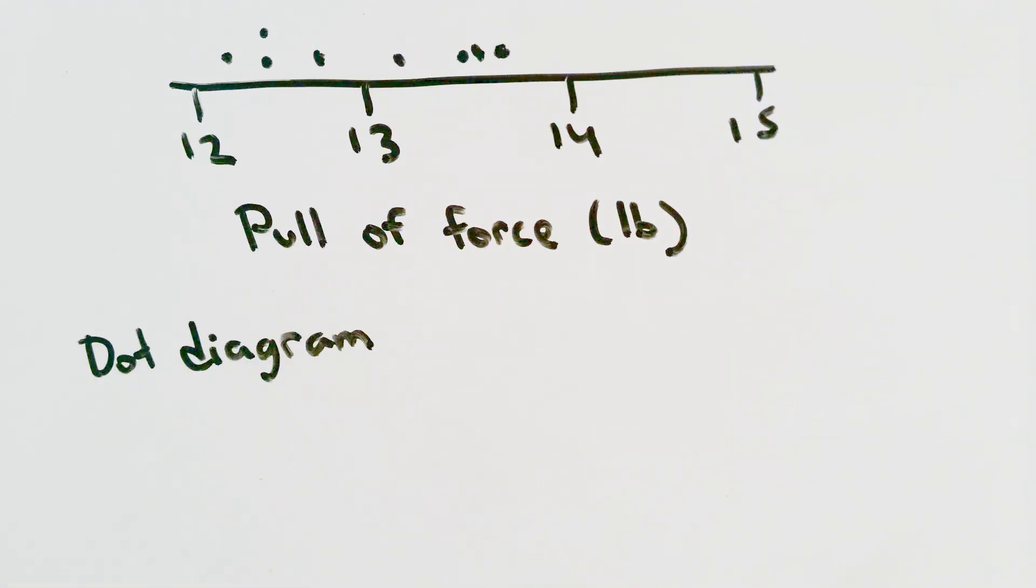A dot diagram is useful for small sets of data, up to about 20 measurements. It allows us to identify the location and the scatter, or variability, and it can be used to compare different sets of data.